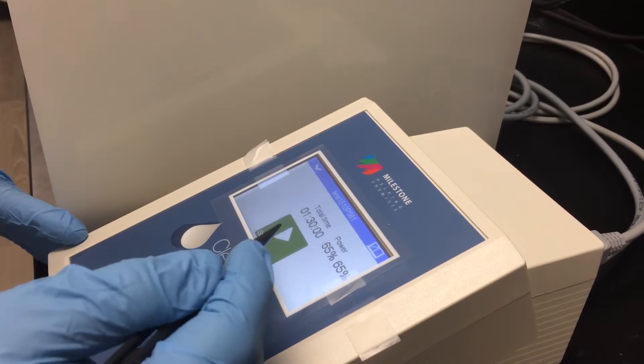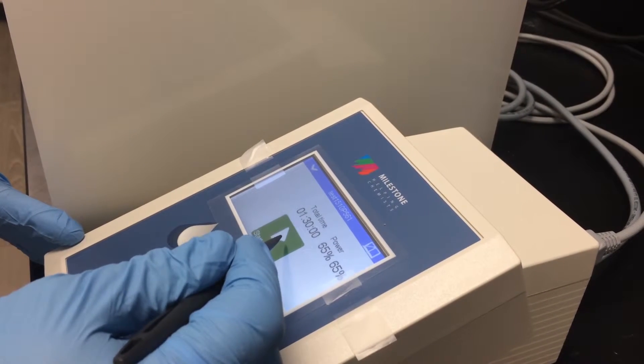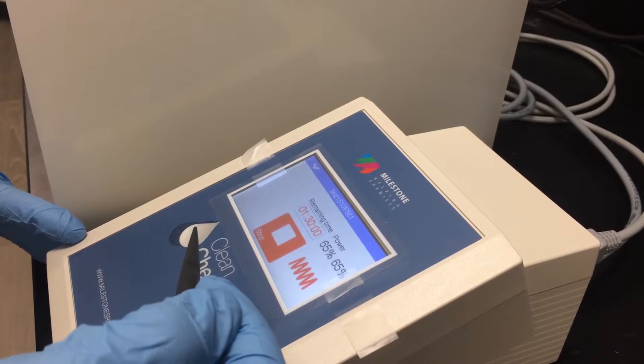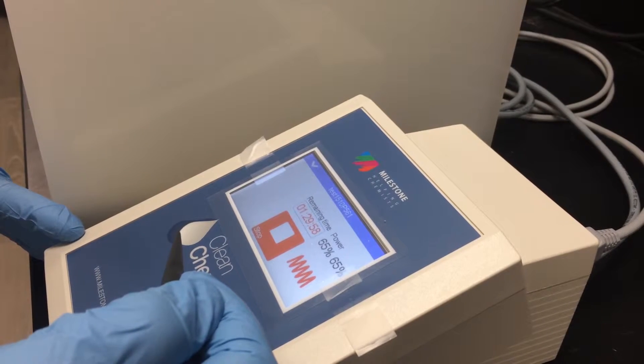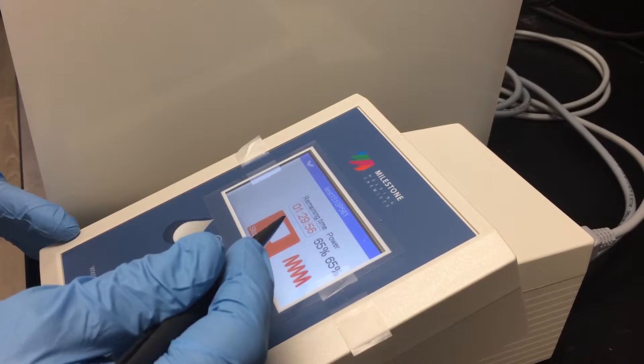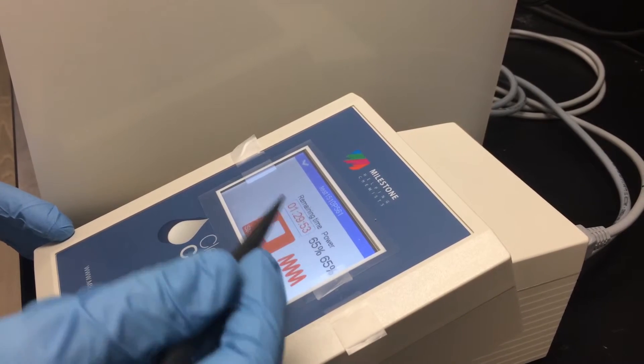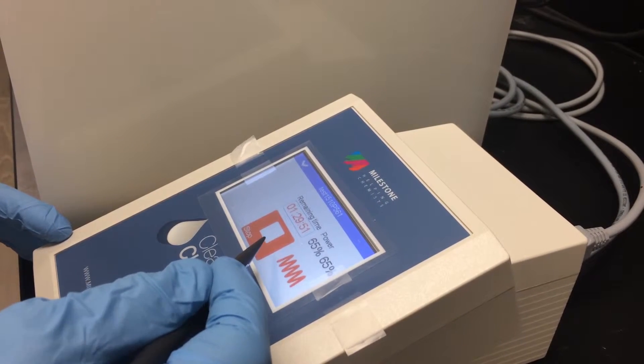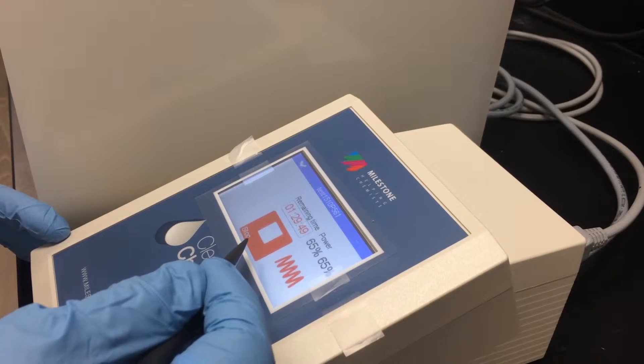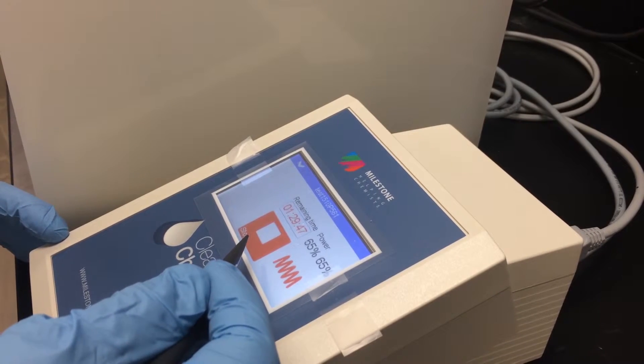Once finished we'll hit the back arrow and we hit start to begin the distillation program. The terminal will let you know how much time is left in the cycle and you have the ability to stop the program if at any time there becomes a need to immediately stop the distillation.